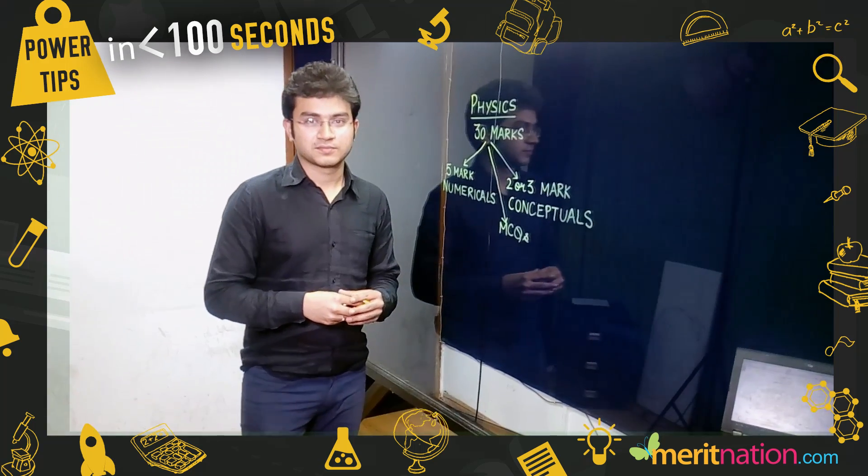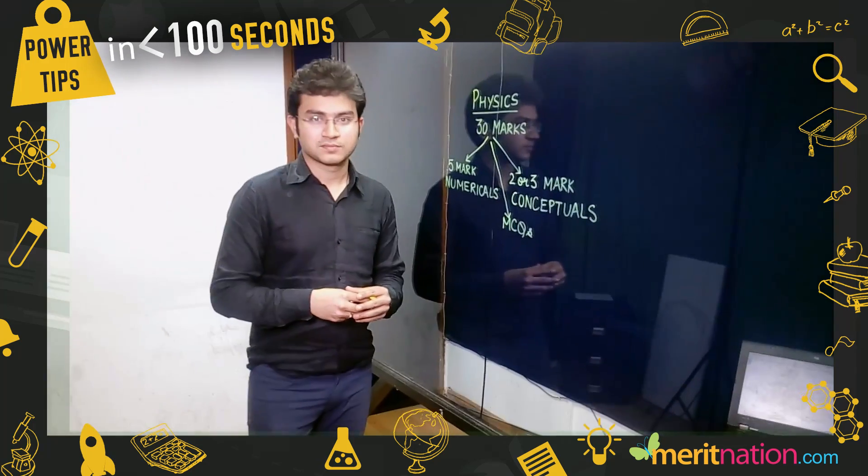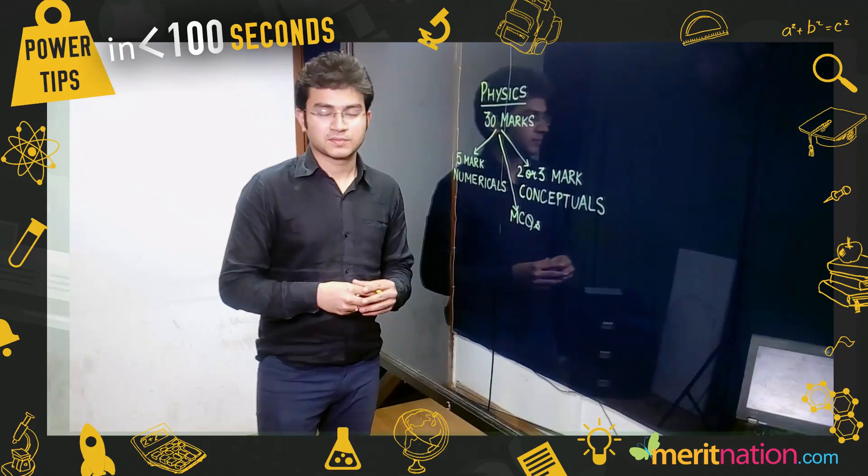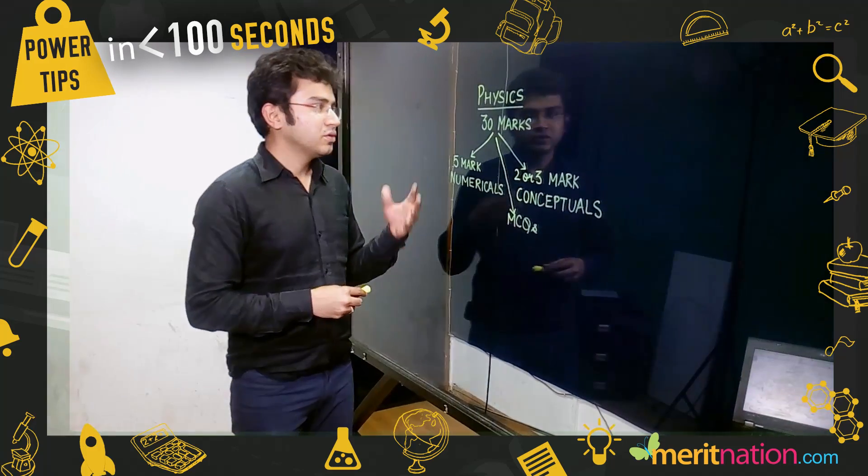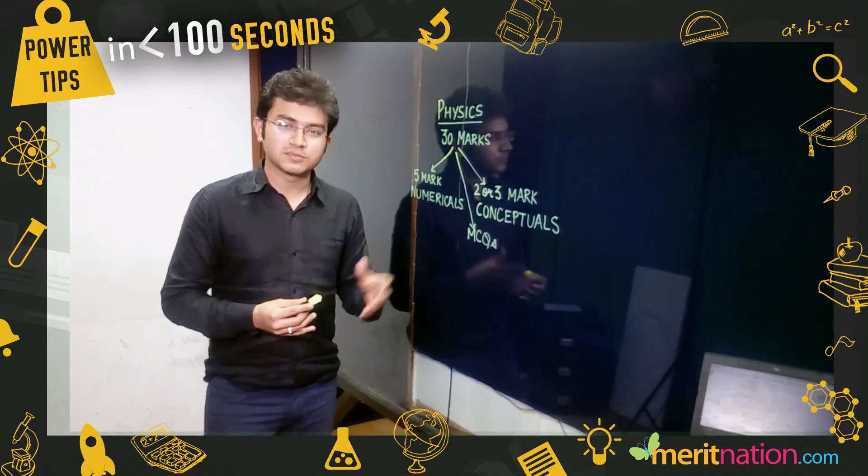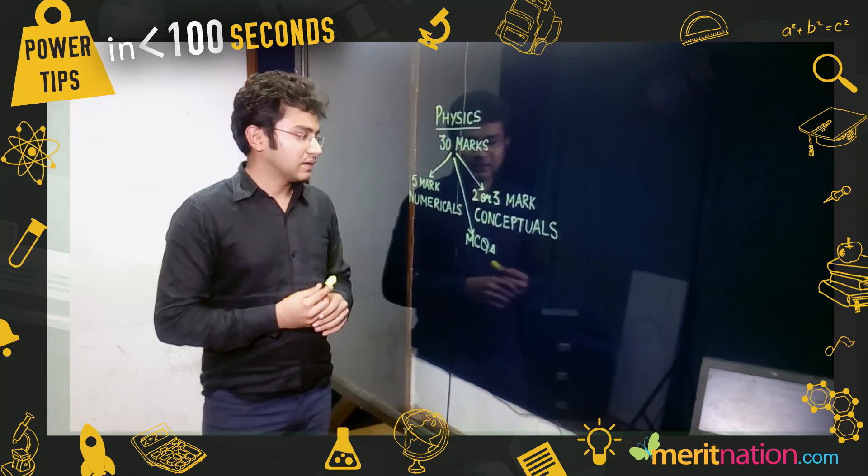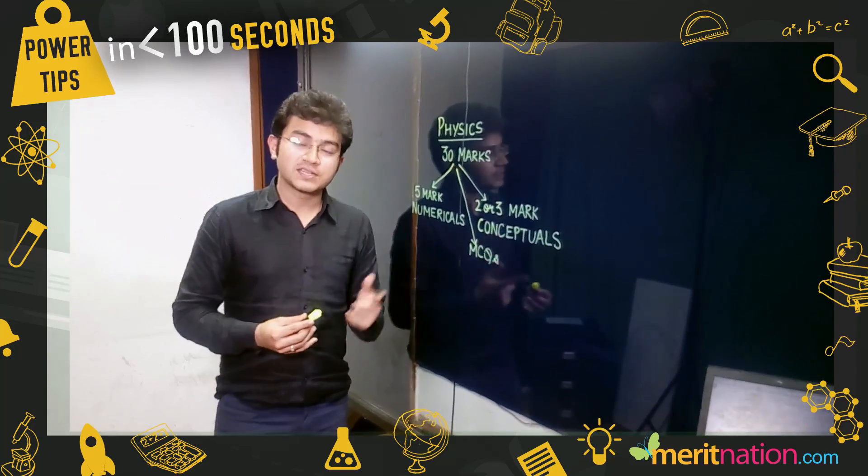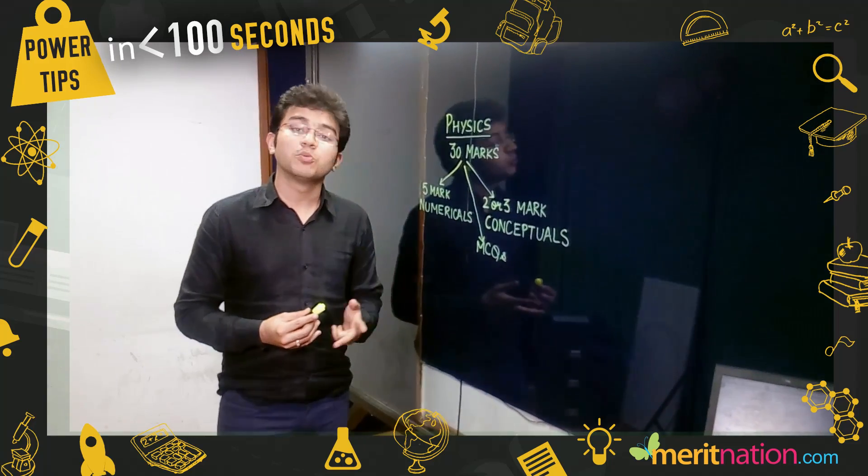Can you help us with some exam tips for the physics section? Sure. Physics is one-third of the science exam, and out of 90 marks, you'll have 30 marks from this section. We have two chapters: light reflection and refraction, and the human eye and the colorful world.